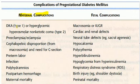With type 1, diabetic ketoacidosis. Type 2, hyperglycemic hyperosmolar non-ketotic coma. Preeclampsia — high blood pressure during pregnancy. Eclampsia with seizures — hypertension with seizures.